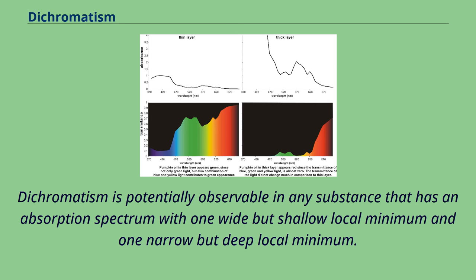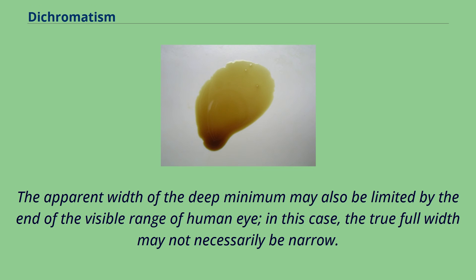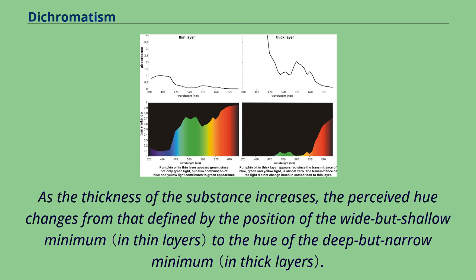Dichromatism is potentially observable in any substance that has an absorption spectrum with one wide but shallow local minimum and one narrow but deep local minimum. The apparent width of the deep minimum may also be limited by the end of the visible range of the human eye; in this case, the true full width may not necessarily be narrow. As the thickness of the substance increases, the perceived hue changes from that defined by the wide but shallow minimum to the hue of the deep but narrow minimum.